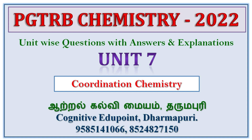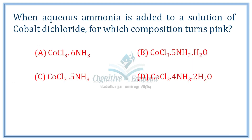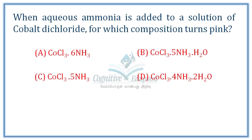In this video series, we will see Unit 7 of PGTRB: Coordination Chemistry. Unit 7 covers term symbols and term states, magnetic properties, various theories involving coordination chemistry, spectroscopy, applications of coordination chemistry, and NMR and ESR. We will focus on coordination chemistry theories and magnetic properties.